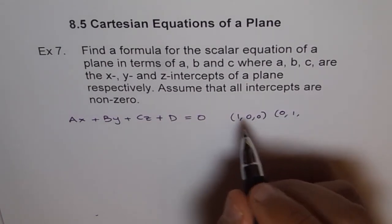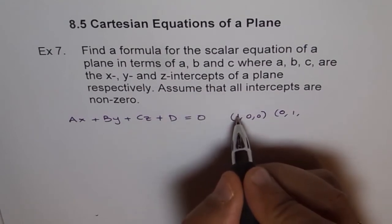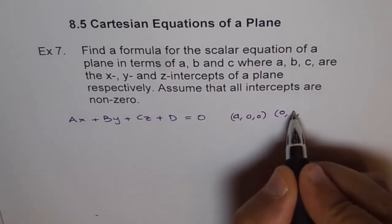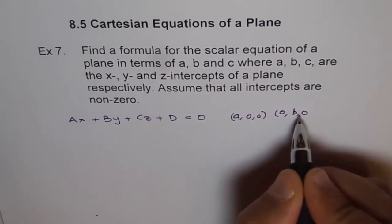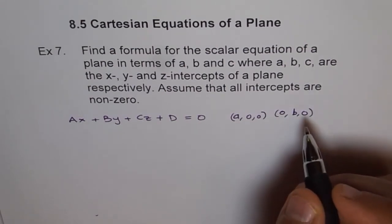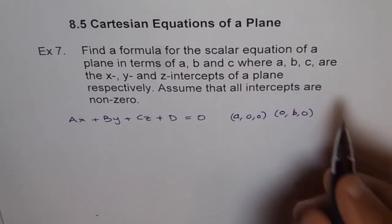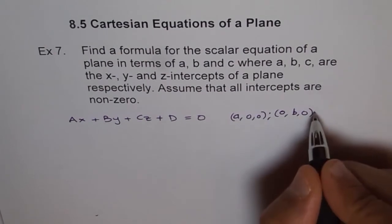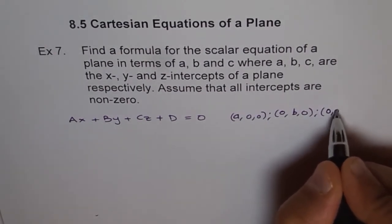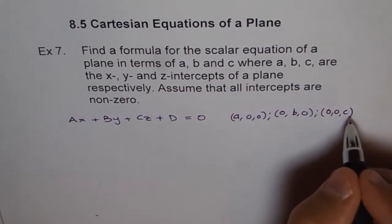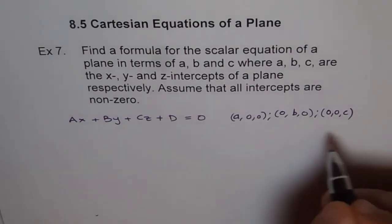In fact, I should write as ABC. So it is A. And Y intercept is 0, B, 0, right? B is your Y intercept. And Z intercept is C. So it is 0, 0, C. C is the Z intercept. So these are basically three points.